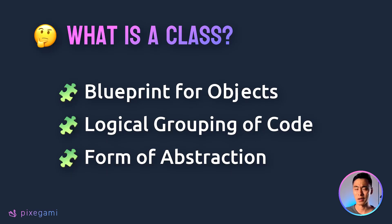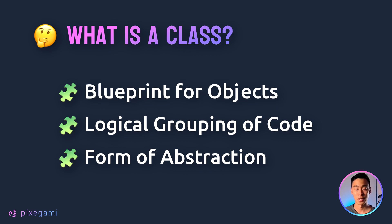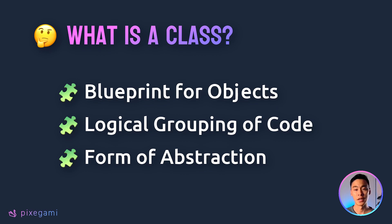So what are classes in Python? One way to think about it is that it is a blueprint for objects that we want to create. It's also a way of organizing our code — it lets us group variables and functions from previous chapters into a single logical unit, making them more convenient to use together. Also, it's a form of abstraction, which means turning something complex and ambiguous into something that's simple and useful to us.